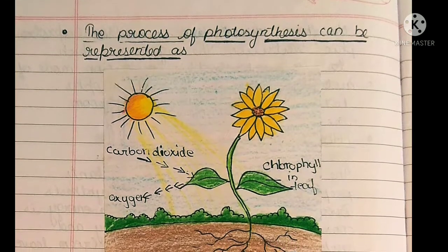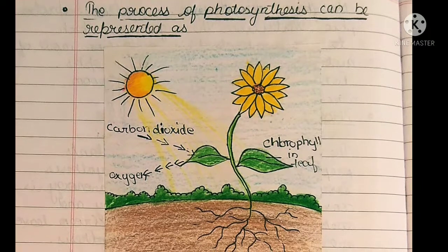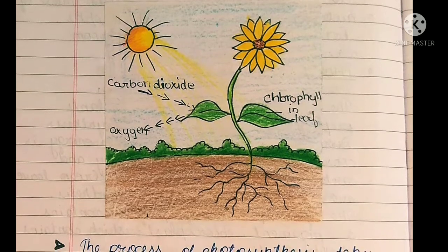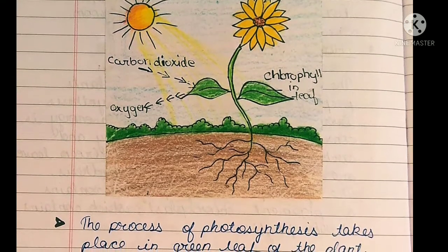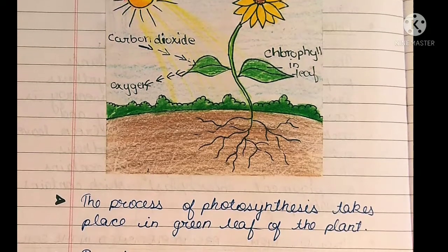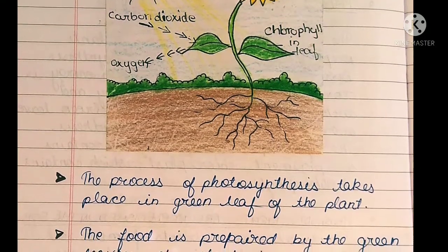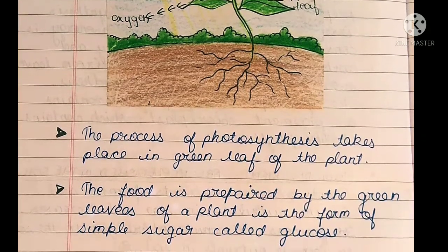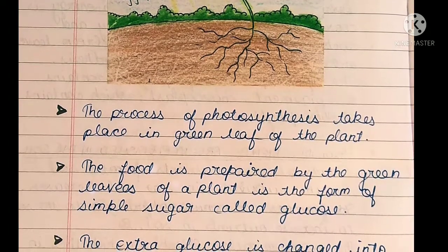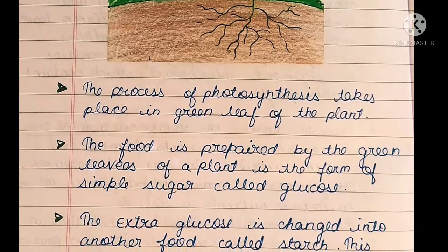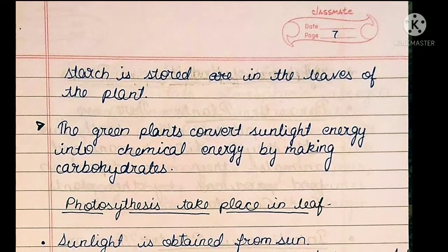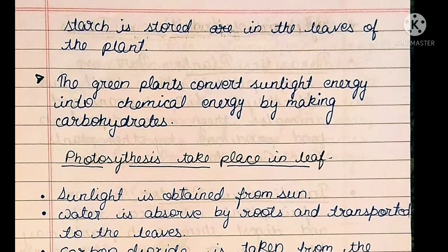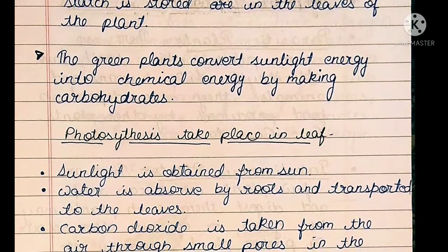The process of photosynthesis takes place in the green leaves of the plant. The food is prepared by green leaves in the form of simple sugar called glucose. Extra glucose is changed into another food called starch, which is stored in the leaves of the plant. Green plants convert sunlight energy into chemical energy by making carbohydrates.